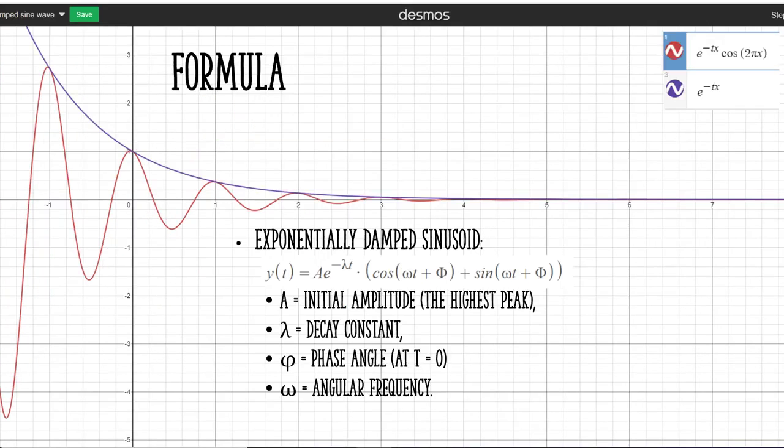A sine wave can be damped in any of an infinite number of ways, but the most common form is exponential damping. If your sine curve is exponentially damped, drawing a line from peak to peak will result in an exponential decay curve.